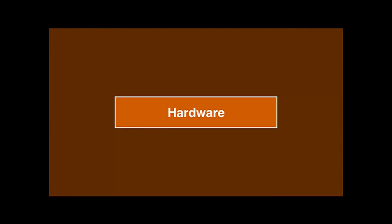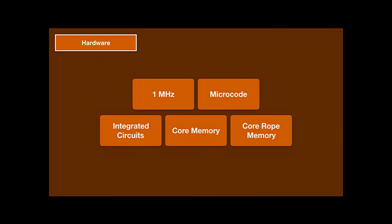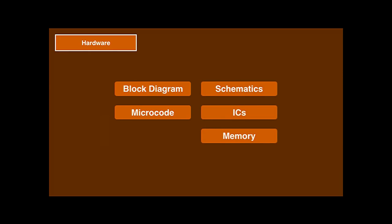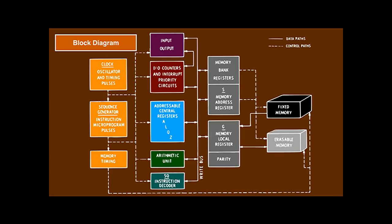Now let's look at how this architecture is implemented in hardware. The hardware implementation runs at one megahertz, is microcoded, and uses integrated circuits, core memory, and core rope memory. This simplified block diagram shows the AGC at the hardware level — each box contains on the order of 500 logic gates.